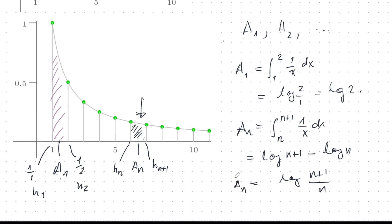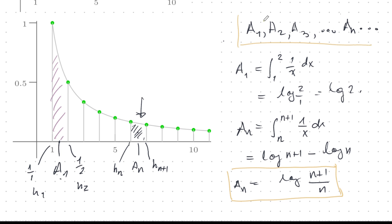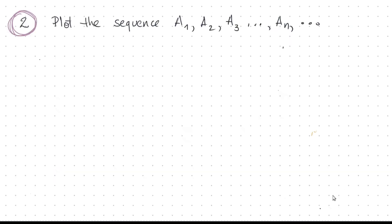This formula allows a geometric interpretation of Euler's sequences. We can now ask: how does this sequence of areas behave? Is there anything we can prove about it? We see that it's decreasing, but it turns out there's a lot more we can say. Let's investigate that. Let's plot the sequence of areas A1, A2, A3, and so on.